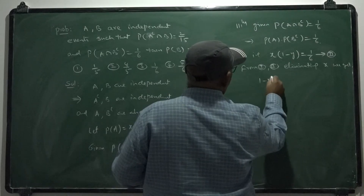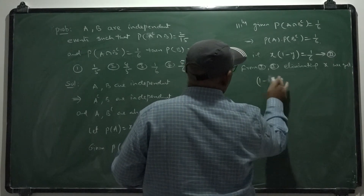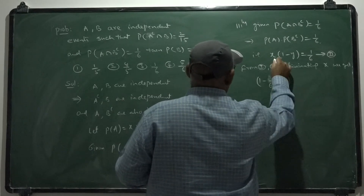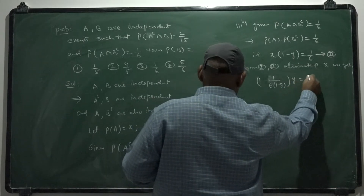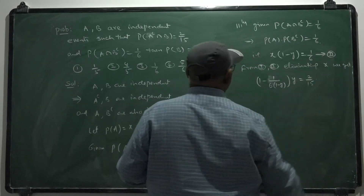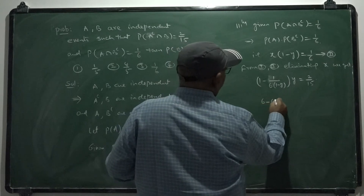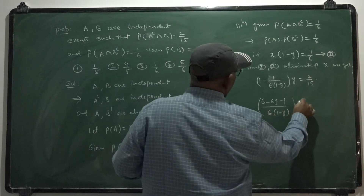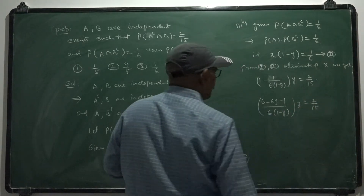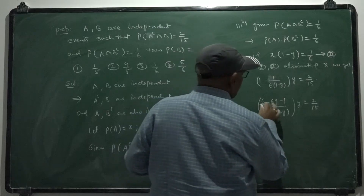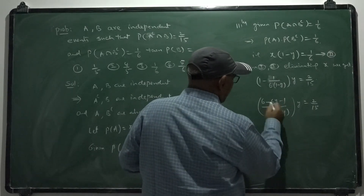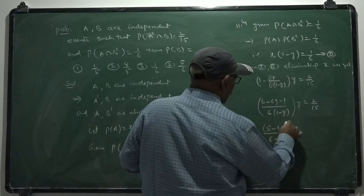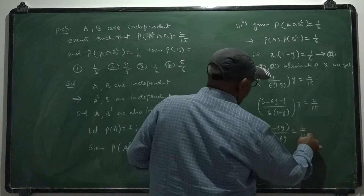How to eliminate X: X may be written as 1 by 6 into 1 minus Y from equation 2. So 1 minus X becomes 1 minus of 1 by 6 into 1 minus Y. Substituting into equation 1: this product times Y equals 2 by 15. That gives 6 minus 6Y minus 6 times 1 minus Y times Y equals 2 by 15 multiplied through.